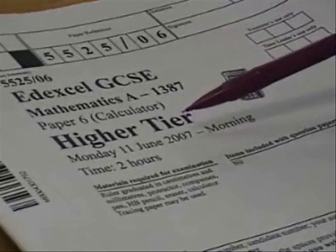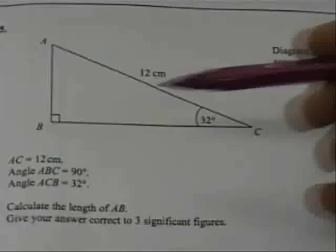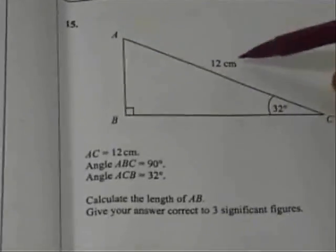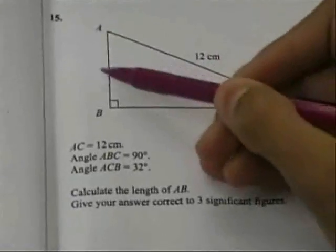This is the June 2007 higher tier question. This is the right angle triangle and this is the hypotenuse. We are asked to find the opposite.